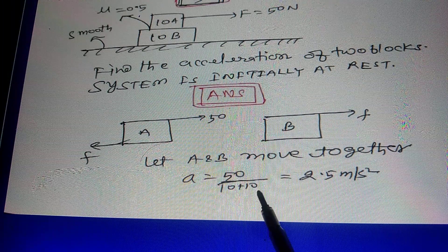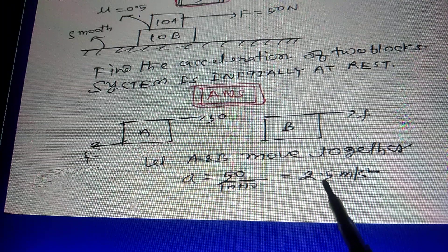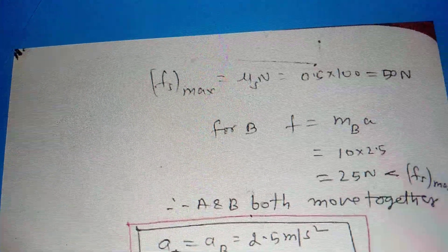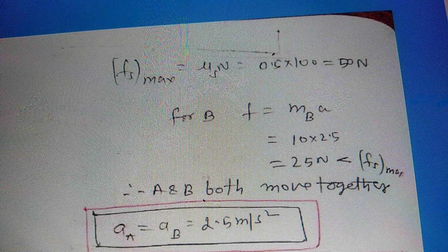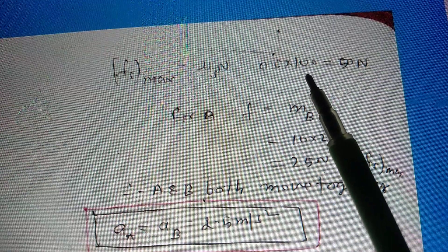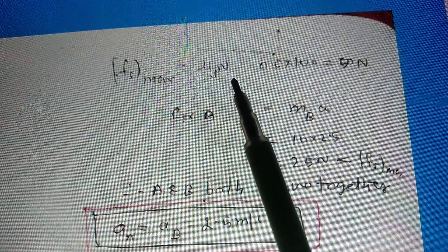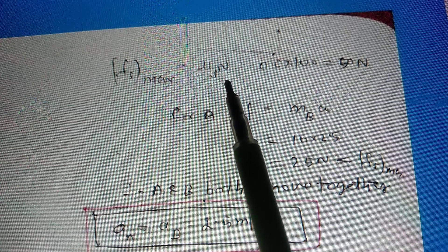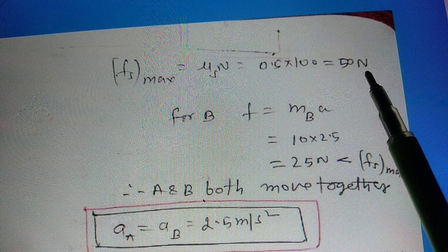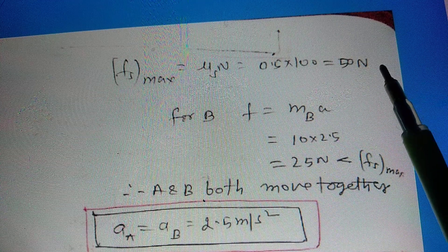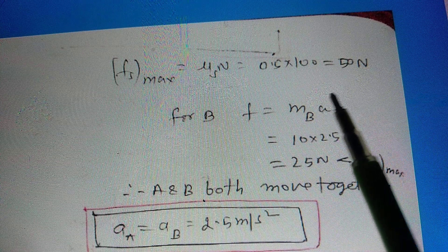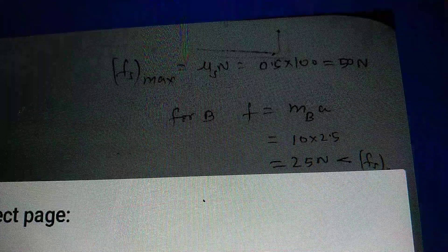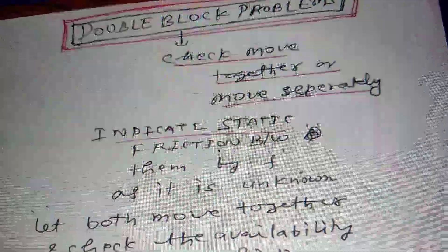Now confirming whether they actually move together. FS maximum = μs·N = 0.5 × (10 × 10) = 0.5 × 100 = 50 N. The frictional force between the blocks in the gap will be internal force. Maximum frictional force between the gap is 50 N. We need to verify if the required friction is less than or equal to 50 N to confirm they move together.